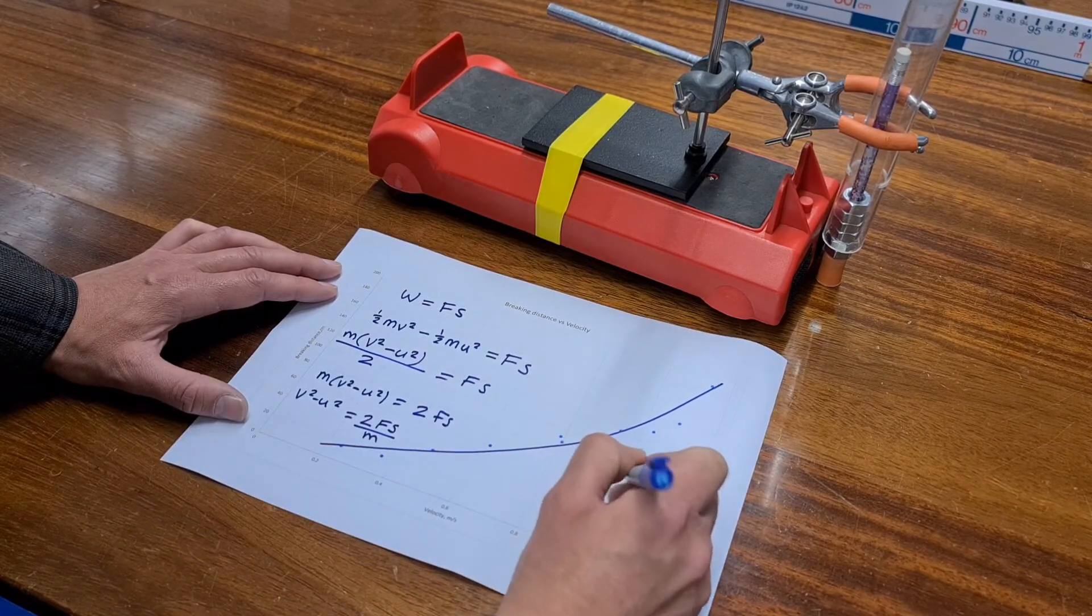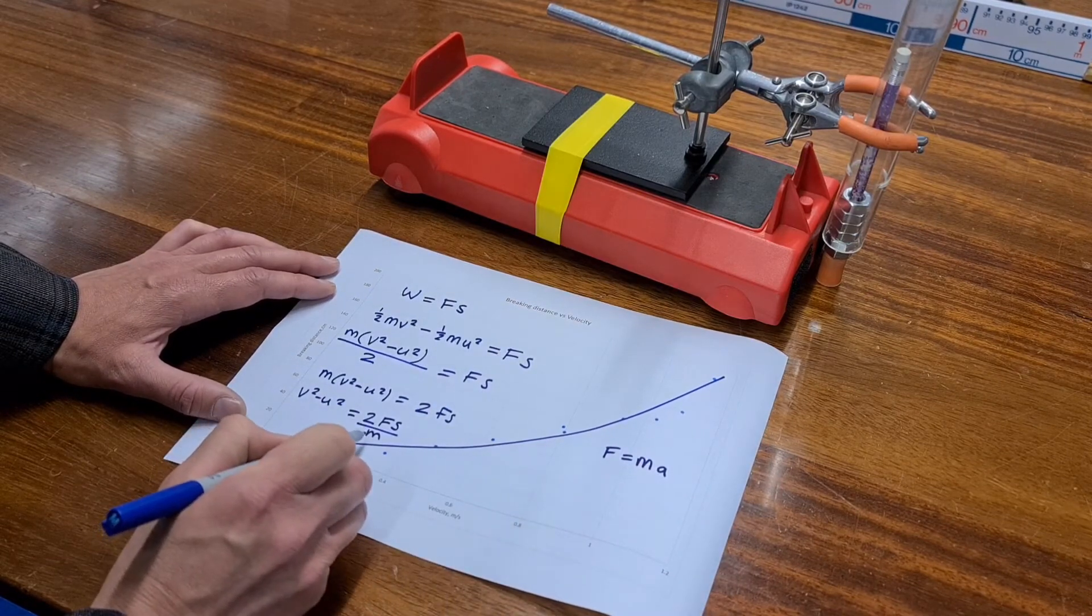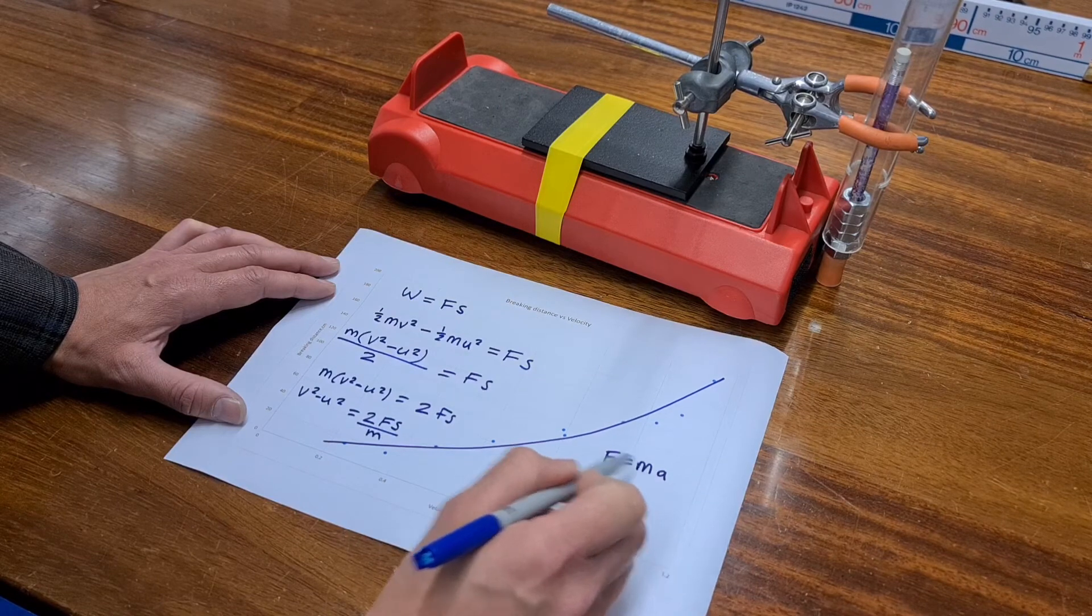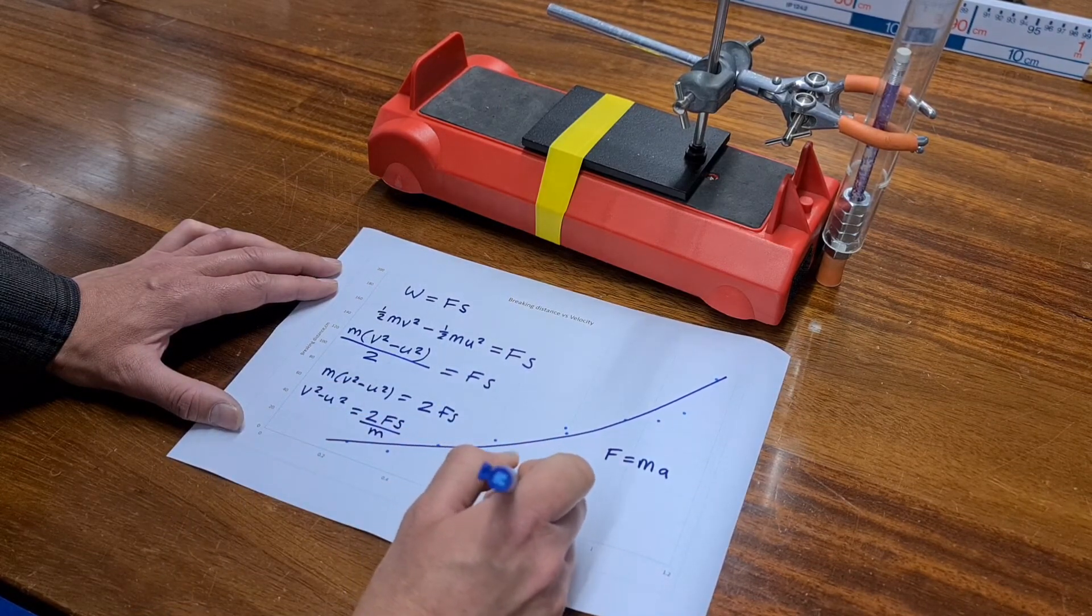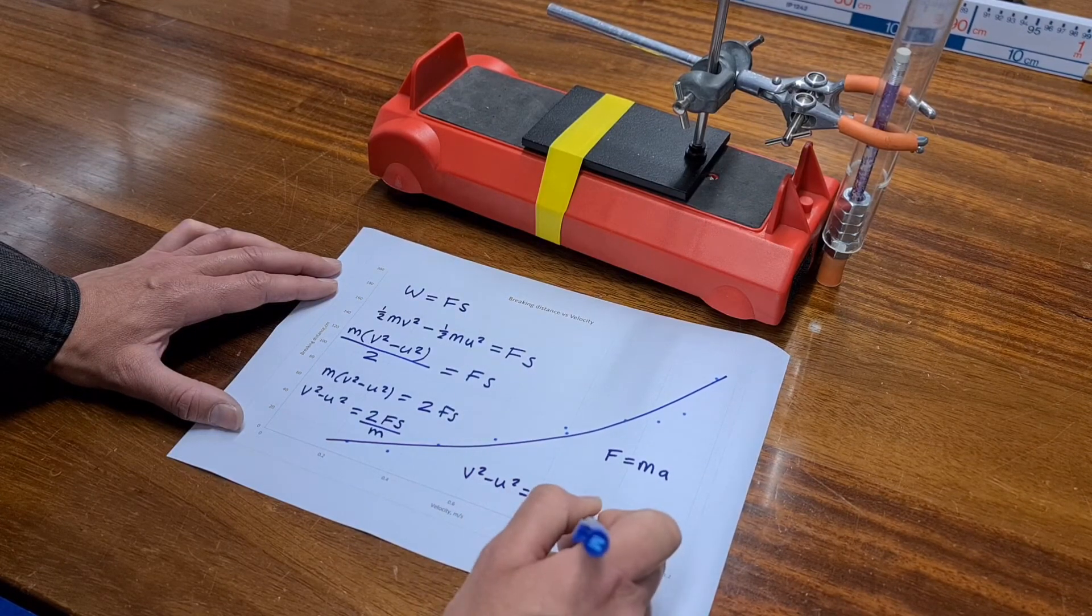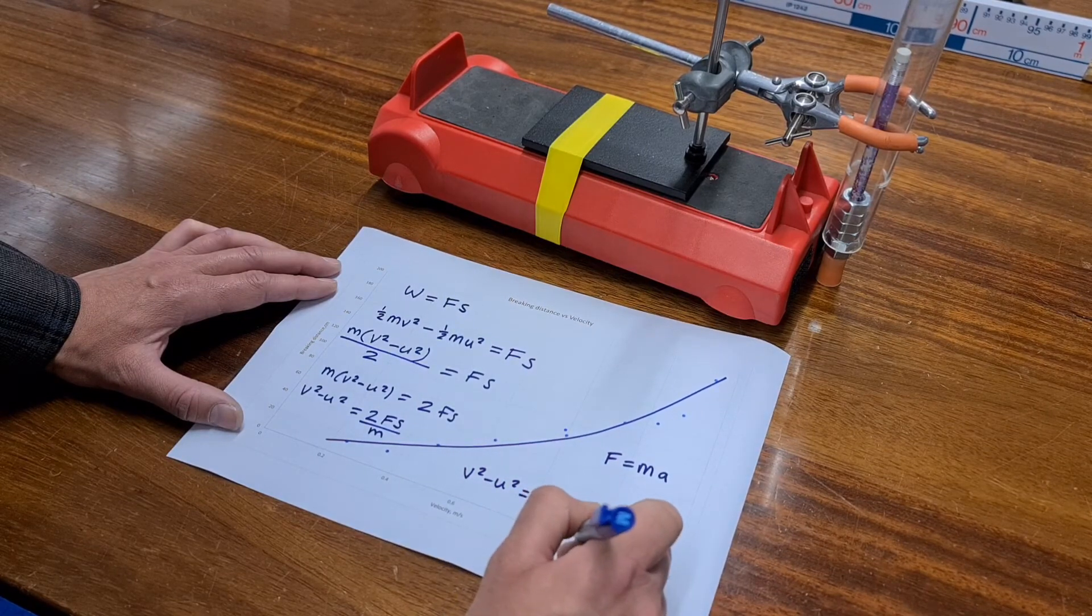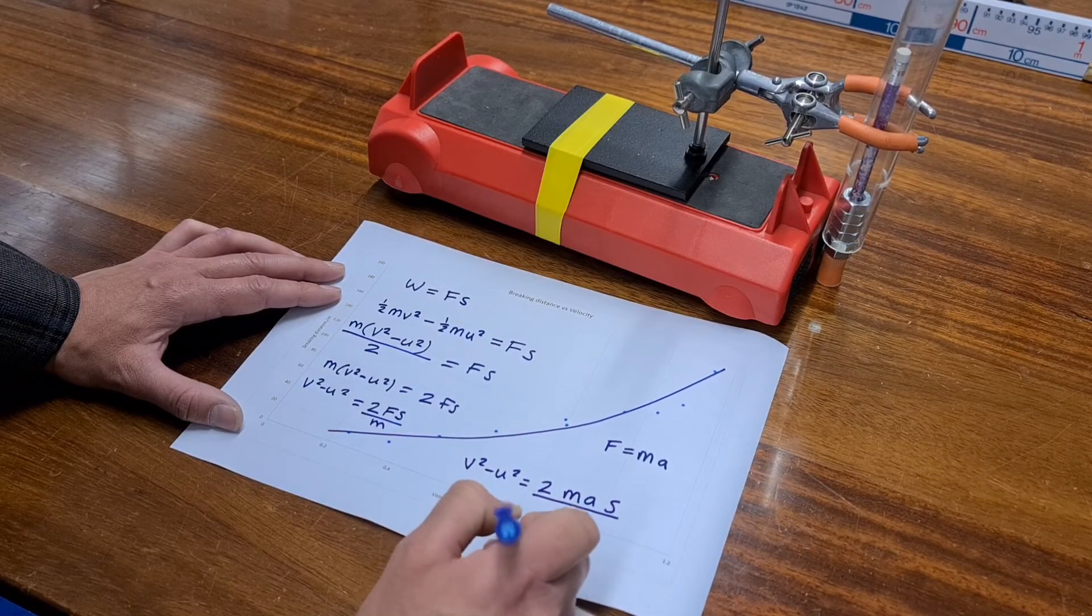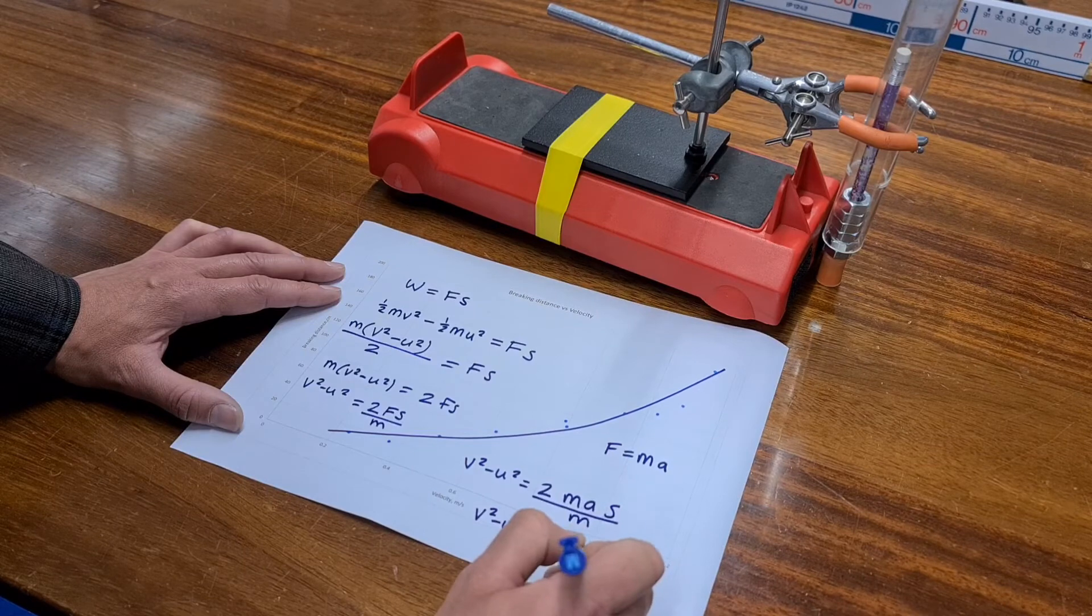But I want you to remember that force is equal to mass times acceleration. So the effect of dividing force by mass is that what we would basically get is that v squared minus u squared is equal to 2ma, which is what the force is equal to, times the displacement, all divided by m. Which gives us v squared minus u squared is equal to 2as.